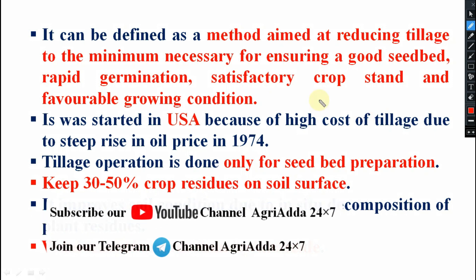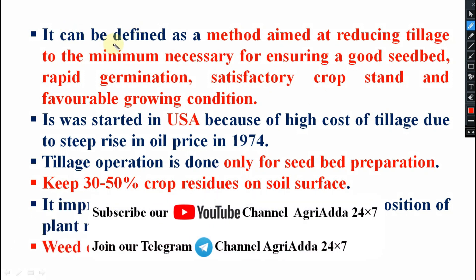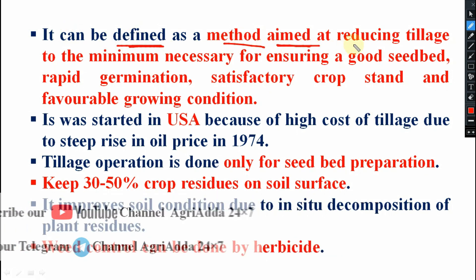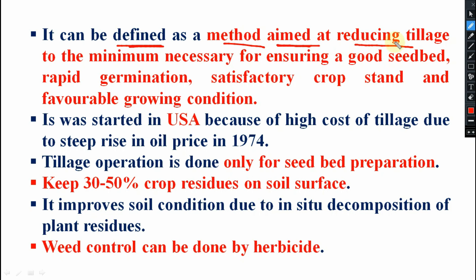Minimum tillage can be defined as a method aimed at reducing tillage to the minimum necessary for ensuring a good seedbed, rapid germination, satisfactory crop stand, and favorable growing conditions.